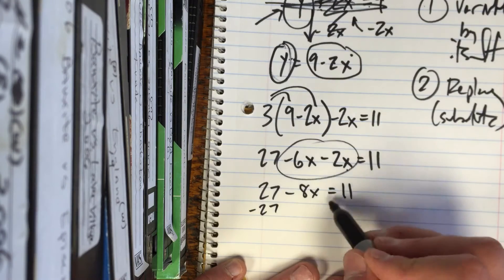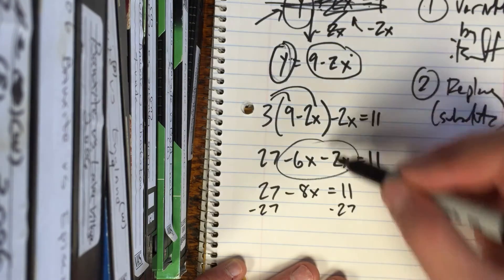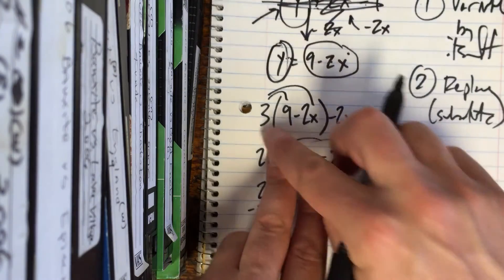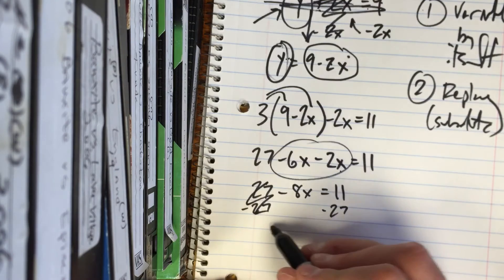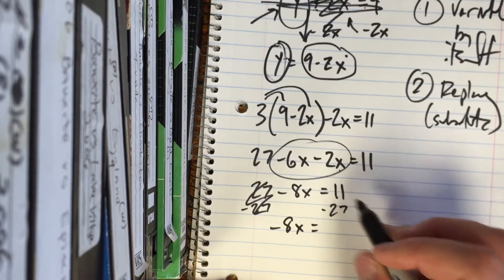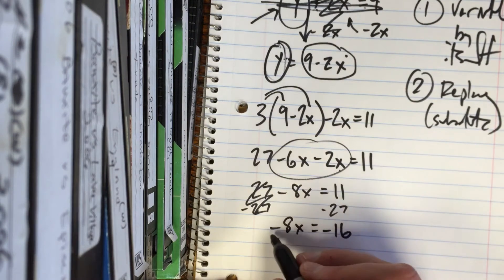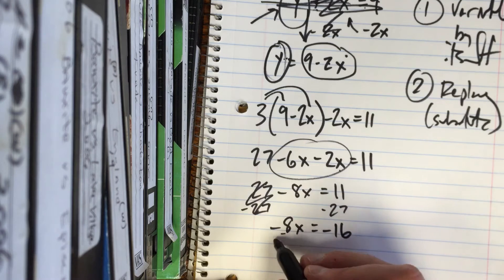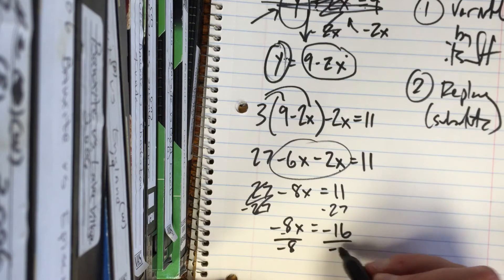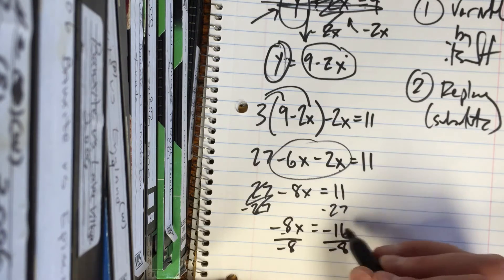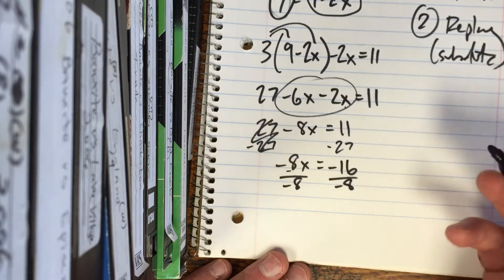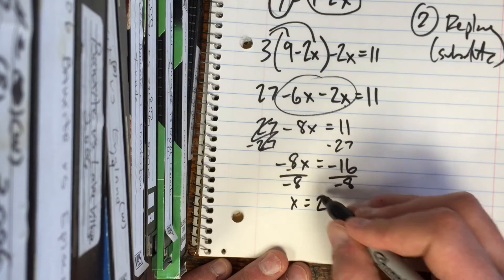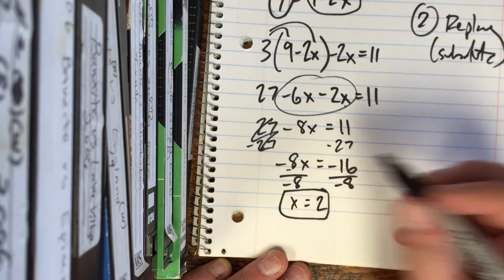We subtract 27 from both sides, because now we're trying to get x by itself. Do you notice how whenever I plug that y in for it, it got rid of all my y's, and I'm just left with x's? So that goes away, negative 8x. And so that'd be negative 16. No, it's negative 8 times x, so the opposite of that is divide. A lot of people will add 8, that's not correct, because what you're doing is the opposite of what's happening between it and the x. So that would be x equals positive 2. Negative and negative make a positive.